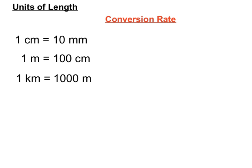When we convert between metres and centimetres, we use a conversion rate. If one centimetre contains ten millimetres, the conversion rate between centimetres and millimetres is ten. Depending on the direction — whether we're converting centimetres into millimetres or millimetres back into centimetres — we will either be multiplying by ten or dividing by ten.